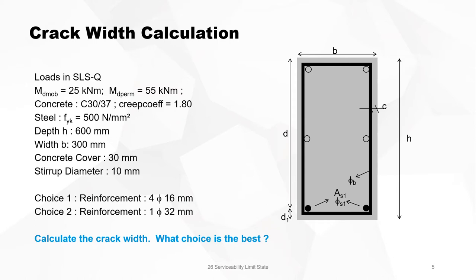1 diameter 32 is 800 square millimeters, 4 diameter 16 is also 800 square millimeters. The total area of reinforcement is the same, but we will see what will be the difference in the calculated crack width.